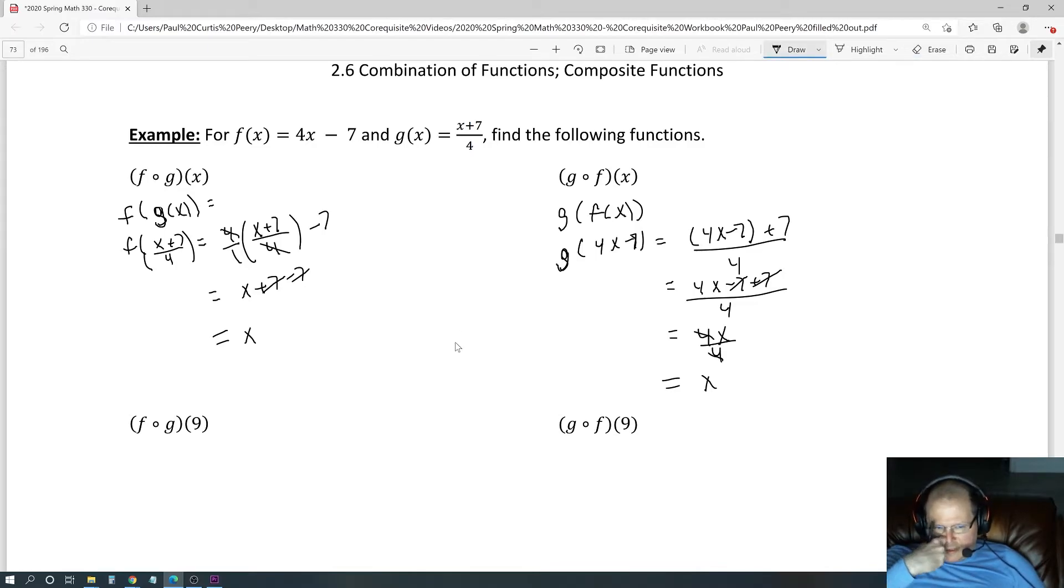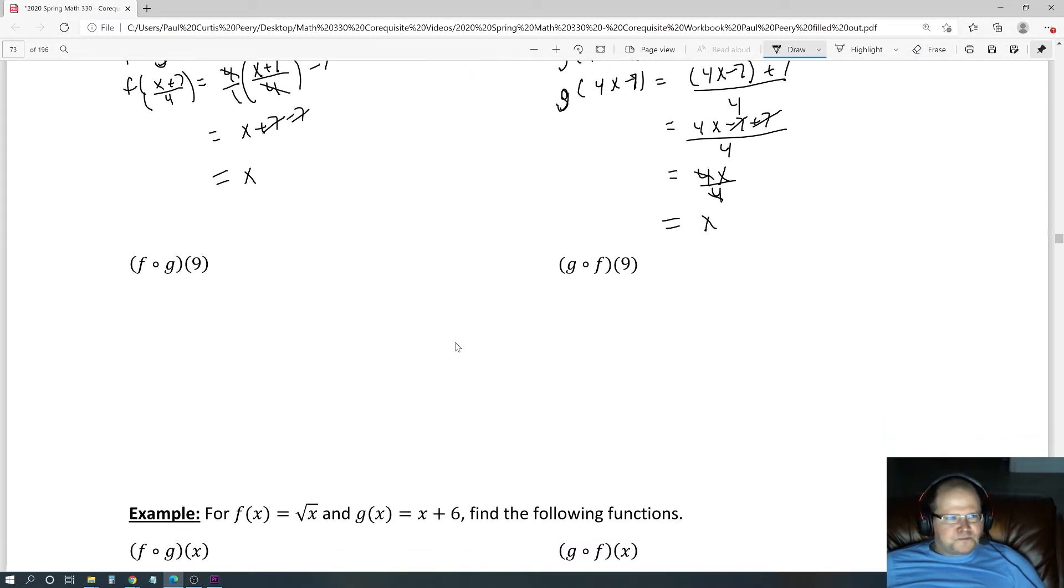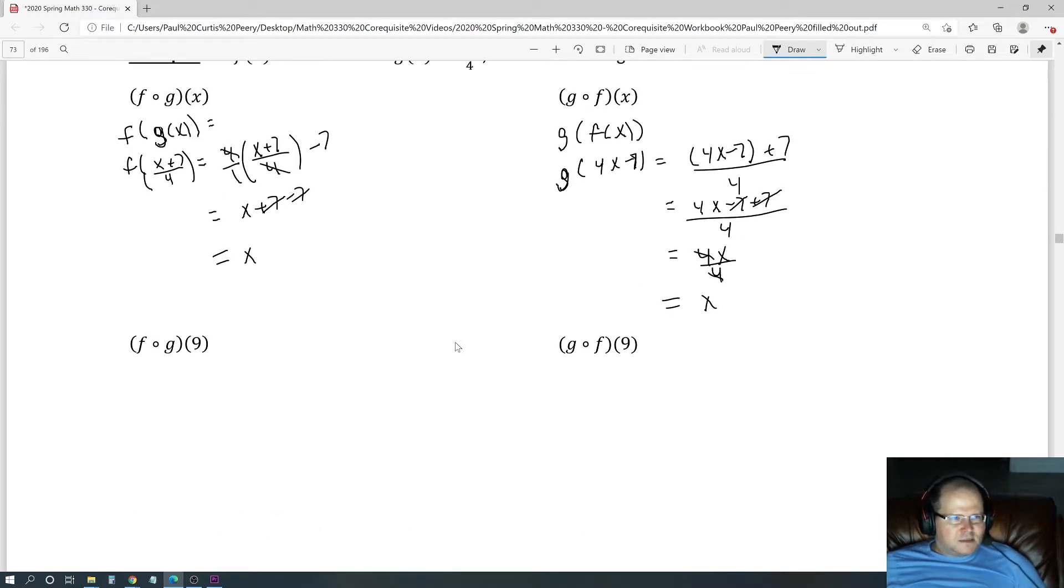It happened in both directions, and that's going to be important later. Now we're going to use this. We already found f composite g of x, and we know it equals x, which means this is simply going to be 9.